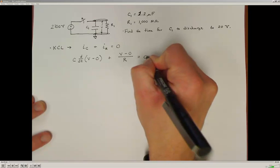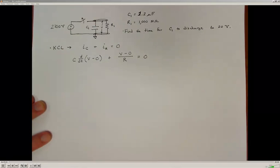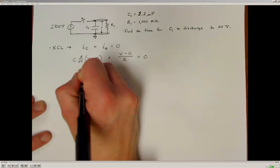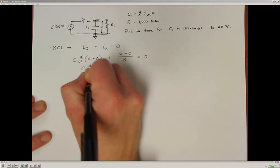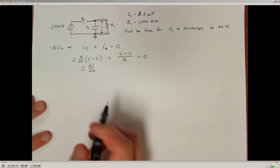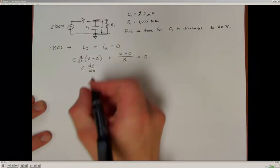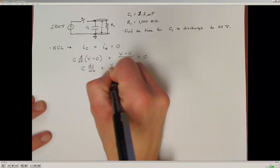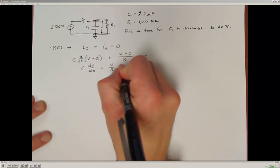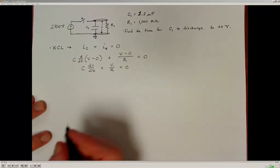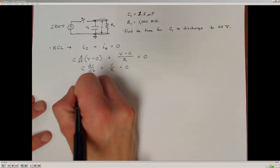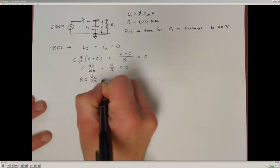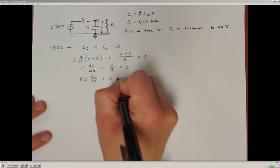All of that has to sum to zero, so the two currents have to sum to zero. Writing out the derivative: C dV/dt plus V over R has to sum to zero. Multiplying through by the resistance value, we find that RC dV/dt plus V has to sum to zero.